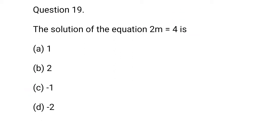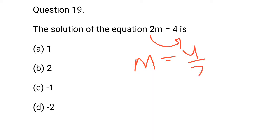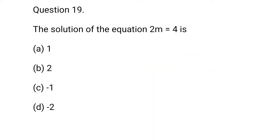Question 19: The solution of the equation 2m is equal to 4. So, m is equal to 4 upon 2. 4 upon 2 is equal to 2. b option is correct.